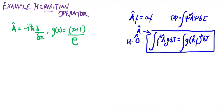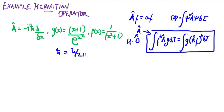Another well-behaved function is f(x) = 1 / (x² + 1). Also note that h-bar equals the Planck constant divided by 2π. That's essentially all we need to know before proceeding.